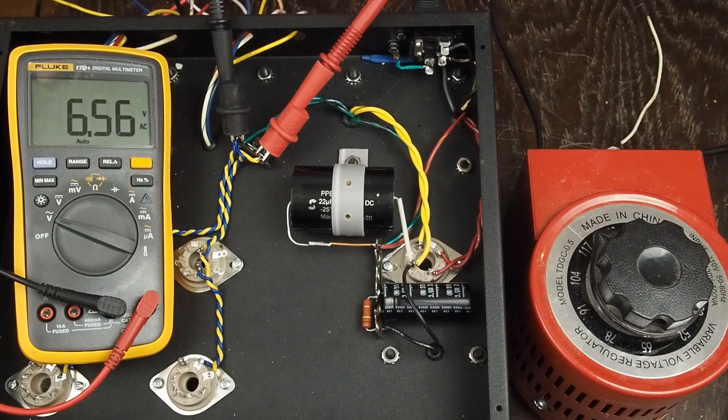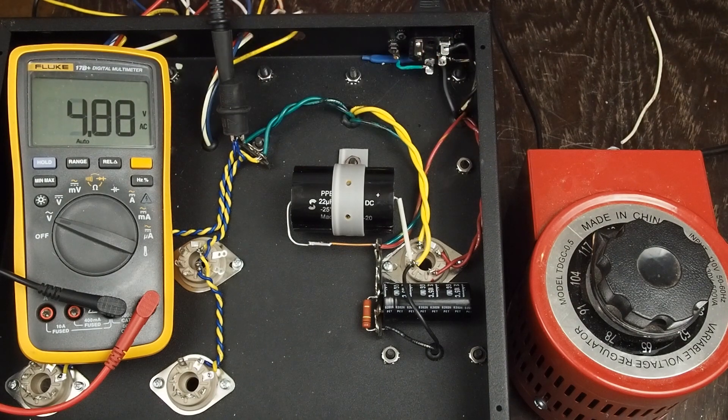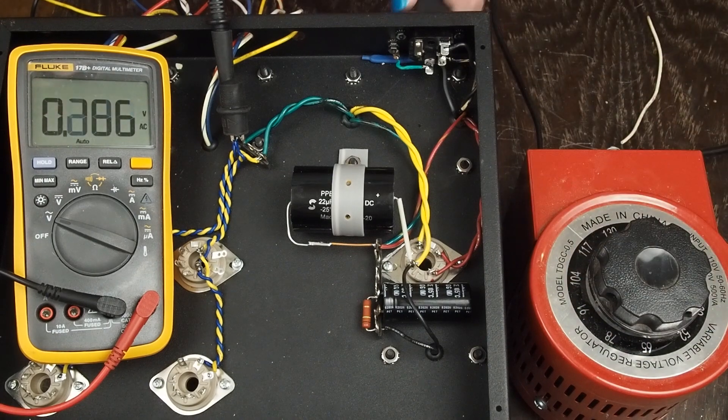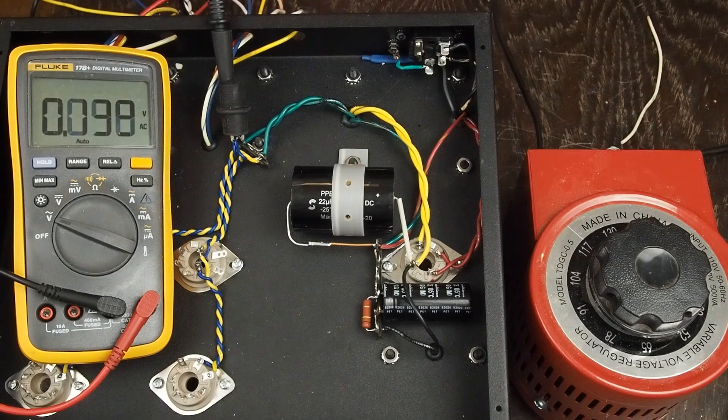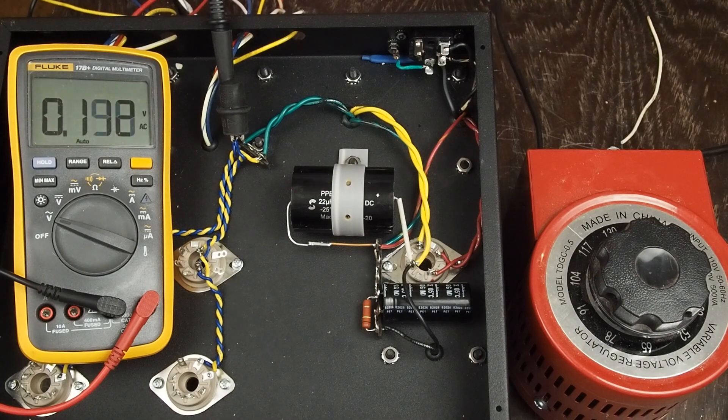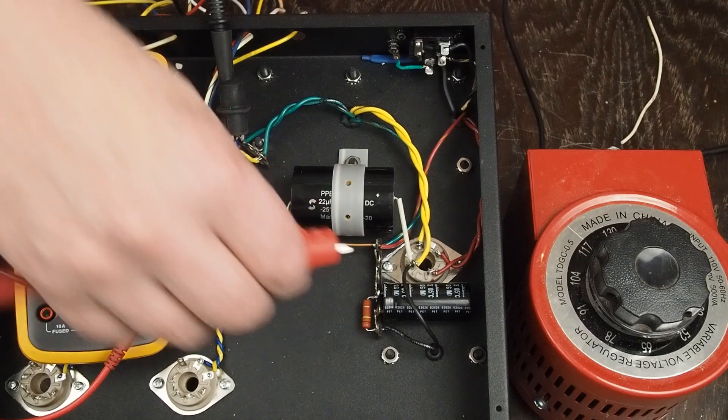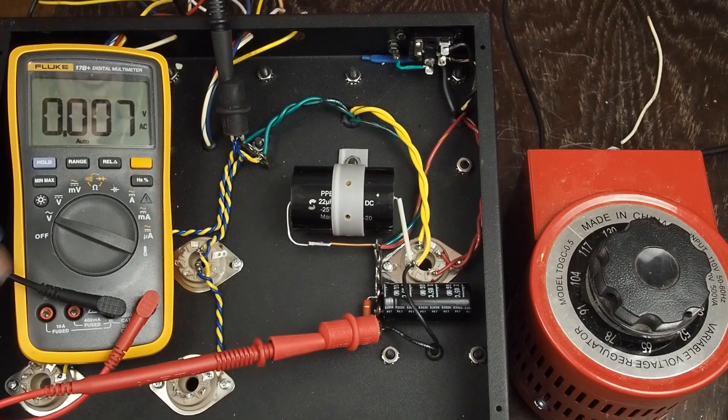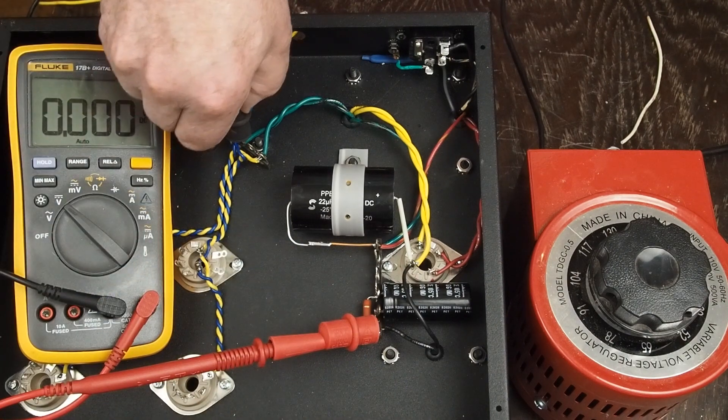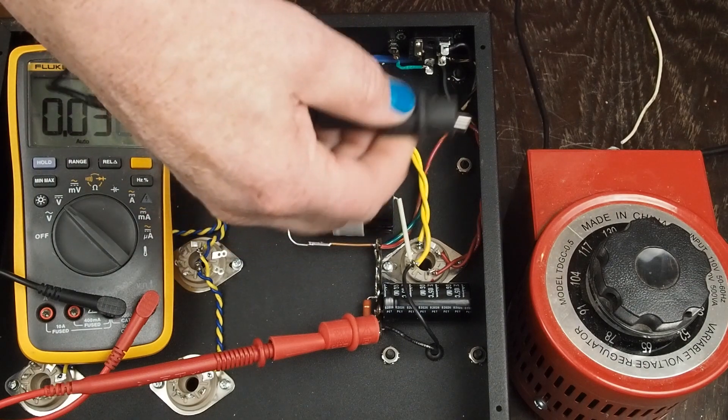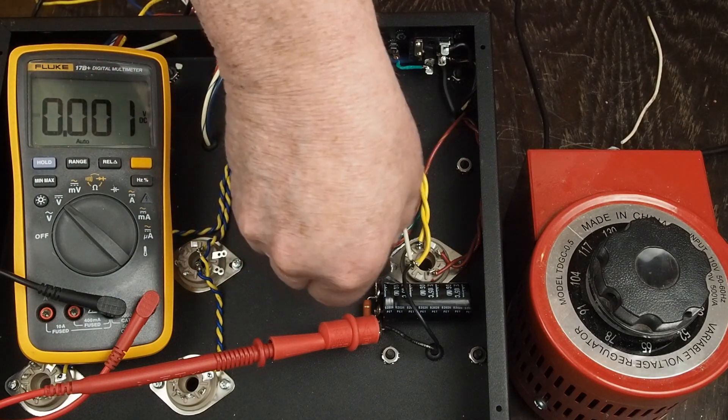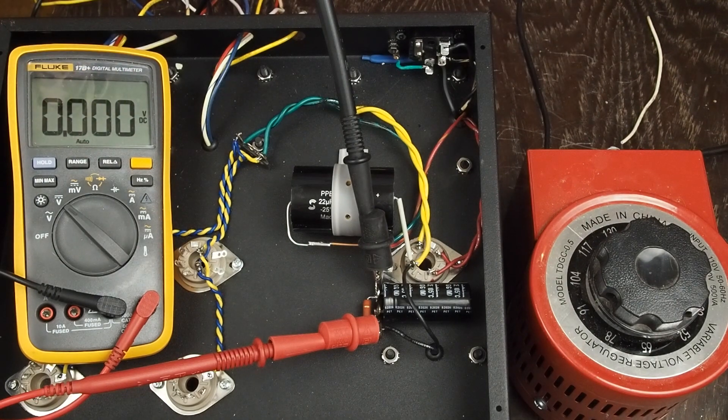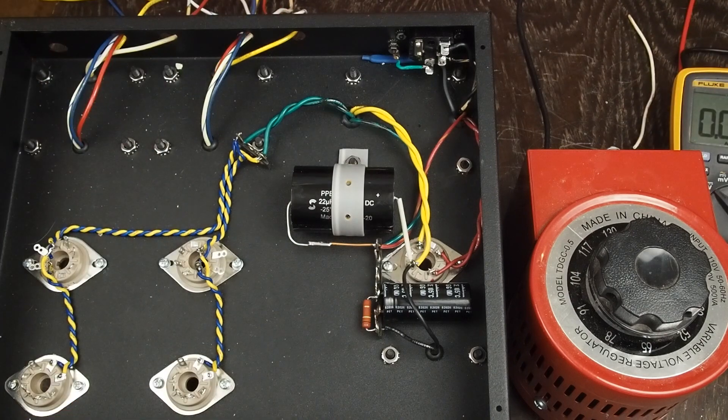So the next thing we want to do is to power off the amp, unplug it, and then we shouldn't have any voltage here because we didn't have the rectifier tube in, but I never assume anything. So we're going to check across the B+ rail, and we in fact have nothing. So the amp is safe to work in. Let's go ahead and check the B+ next.